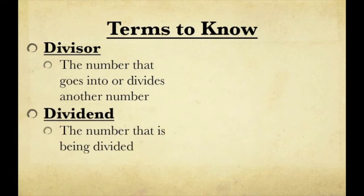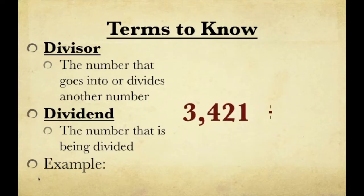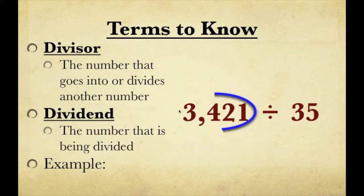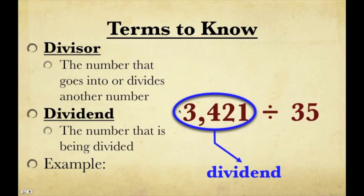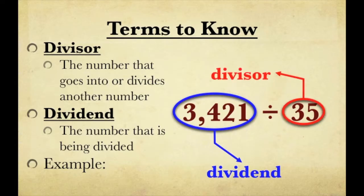And the dividend is the number that is being divided. For example, let's take 3421 divided by 35. Our first number, 3421, is our dividend, because it's the number being divided. Our other number, 35, is actually our divisor, because it's the number doing the dividing — the number going into 3421. Therefore, it's our divisor.